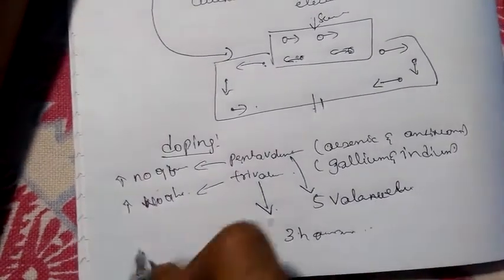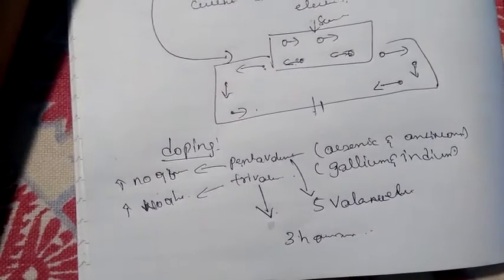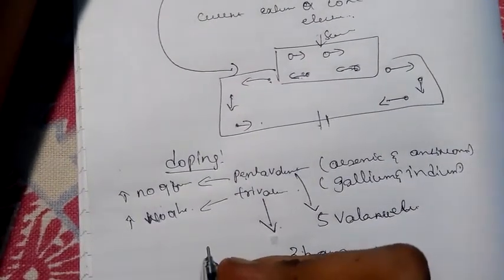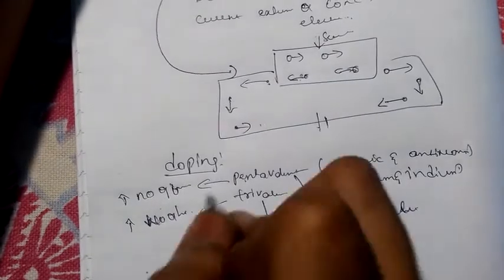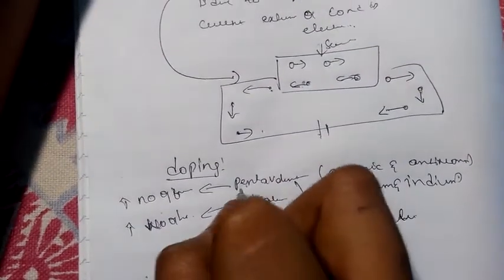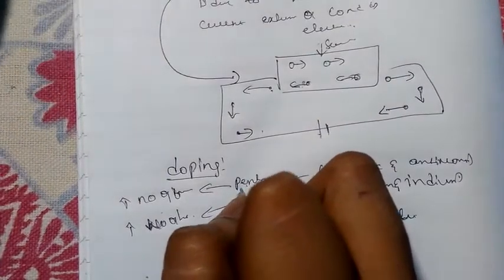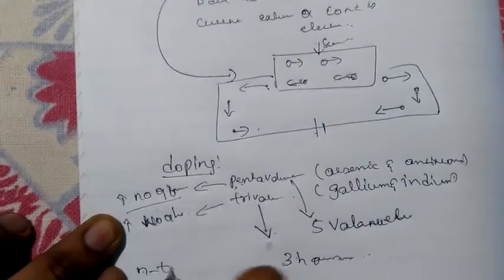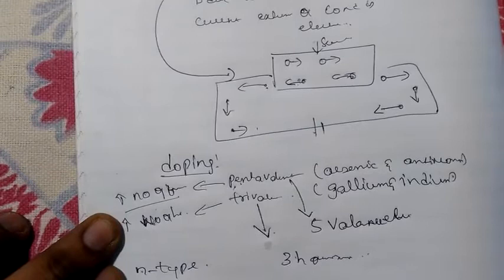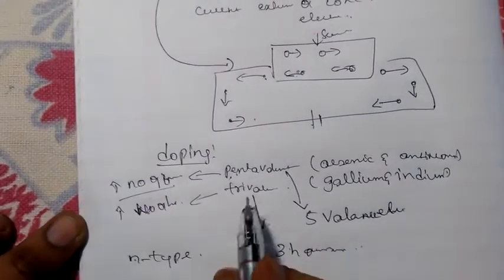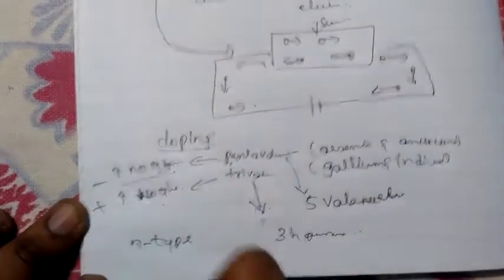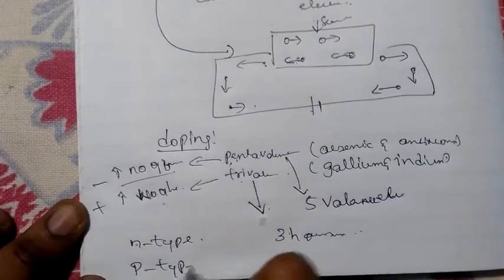When we add a pentavalent impurity, it increases the number of electrons, and the material is called N-type semiconductor. When we add a trivalent impurity, it increases the number of holes, which are positive charges, and the material is called P-type semiconductor.